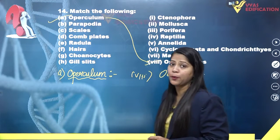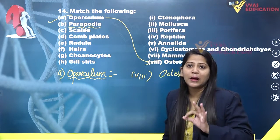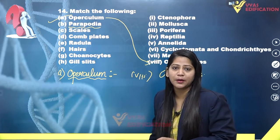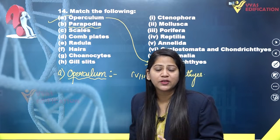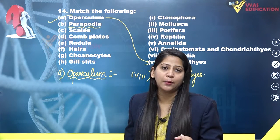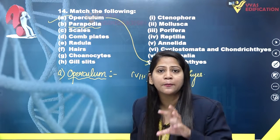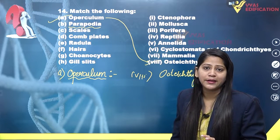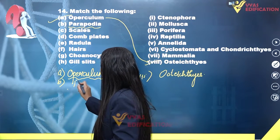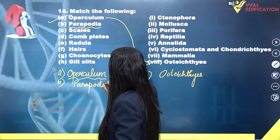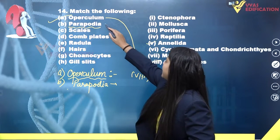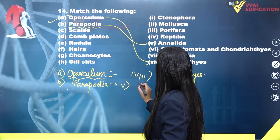The next option is parapodia. Parapodia are the lateral appendages found in annelids. In the phylum Annelida, we have organisms like earthworm, leeches, and Nereis. Among these, Nereis is an aquatic worm that has lateral appendages known as parapodia, which help it in swimming. So parapodia will match with Annelida.